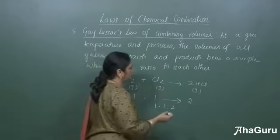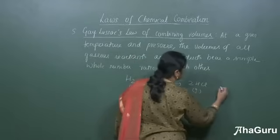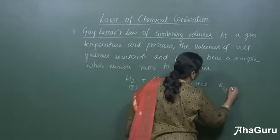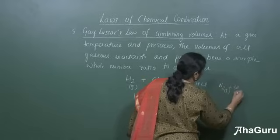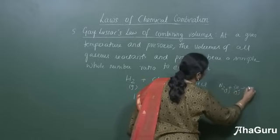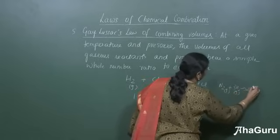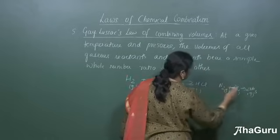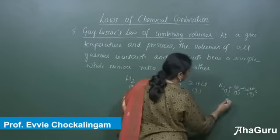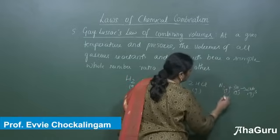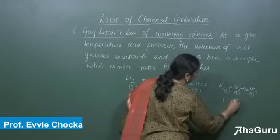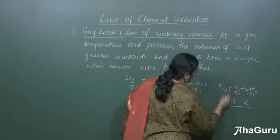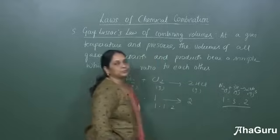Another example: N₂ gas reacts with H₂ gas to give 2NH₃ gas. What is the ratio of the combining volumes? It is 1 volume to 3 volumes to 2 volumes — again a simple whole number ratio.